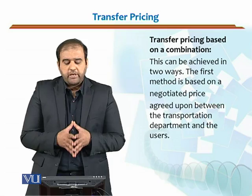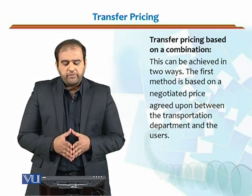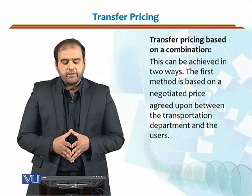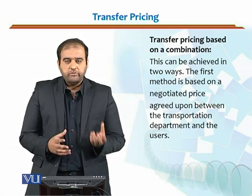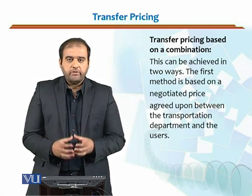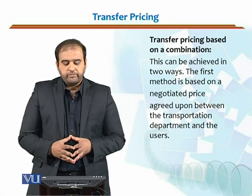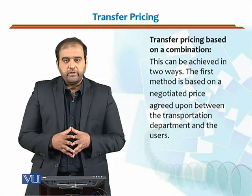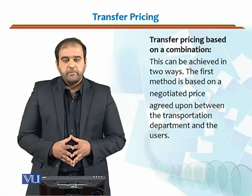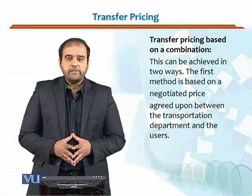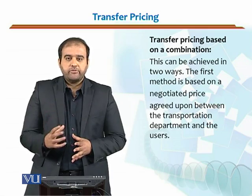Then we have transfer pricing based on a combination. This can be achieved in two ways. The first method is based on a negotiated price agreed upon between the transportation department and the users. The user and the transportation company will actually negotiate the price — what would be the transfer price. This is one way that the user and the transportation company would negotiate and agree upon some price. That might or might not be influenced by the market price, because the user might have some extra requirements.